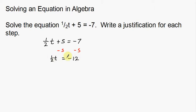Now I see this one half here. One half is multiplying t, so I need to divide by one half. The tricky thing is we don't really know how to divide by one half. On the left side, one half divided by one half will cancel and all you're left with is t. But negative 12 divided by one half is a little tricky.